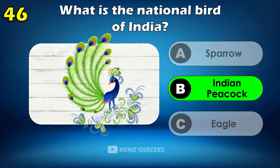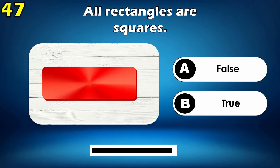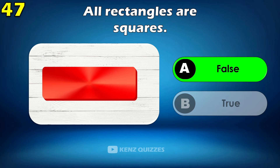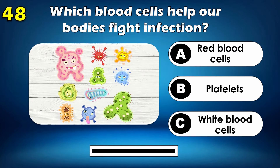What is the national bird of India? Indian Peacock. All rectangles are squares — is it true or false? False.